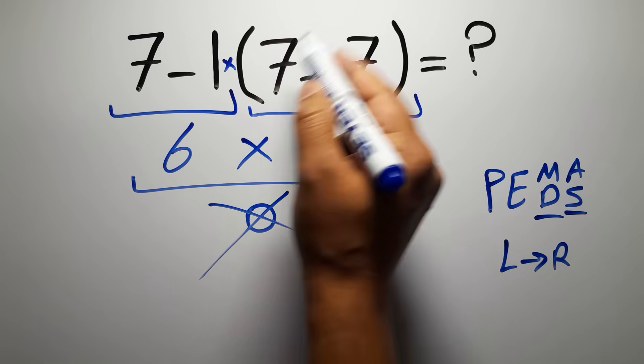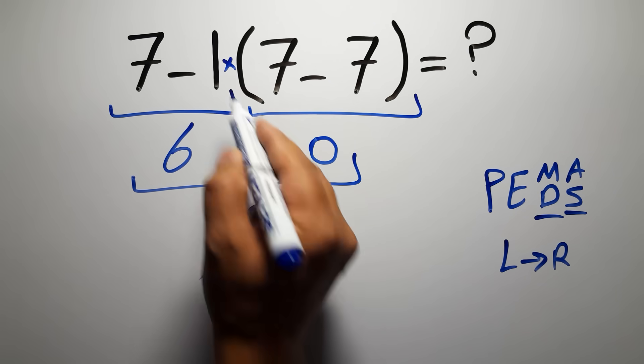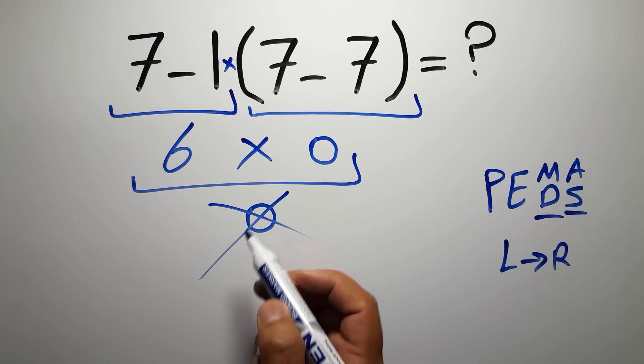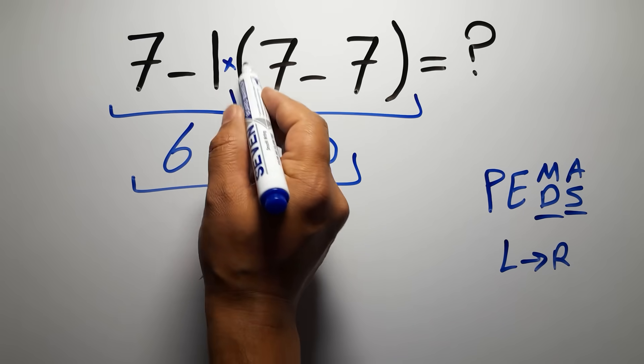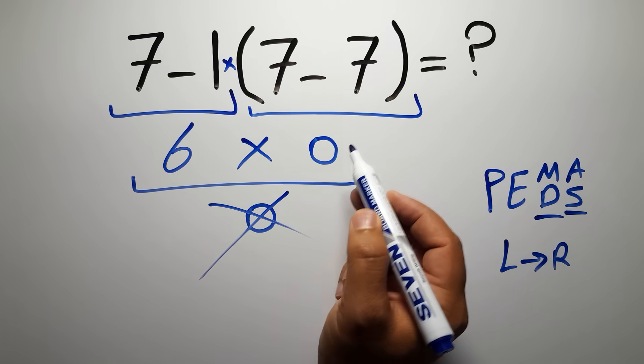So according to PEMDAS, first we have to do this parentheses, then this multiplication, and finally this subtraction. If we do this subtraction before this multiplication or these parentheses, it is wrong.